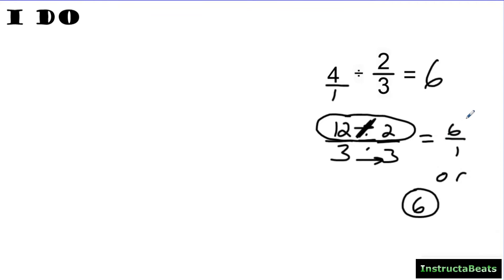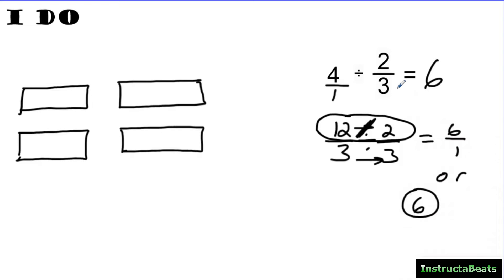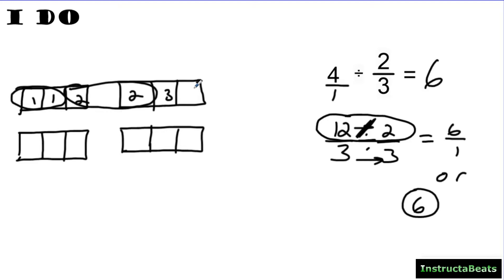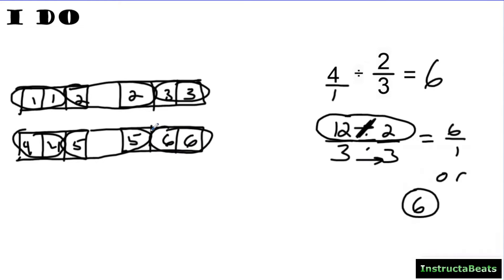If you want to see why this works, let me draw four wholes. My denominator is 3, so I need to split these into 3 equal groups. Once you have this common denominator, you're trying to figure out: if I put two thirds in each group, how many groups can I make? Here's group one, here's my second group, third group, fourth group, fifth group, and sixth group. This is very much like dividing with area models — the shortcut is that you can find a common denominator and then divide across instead.